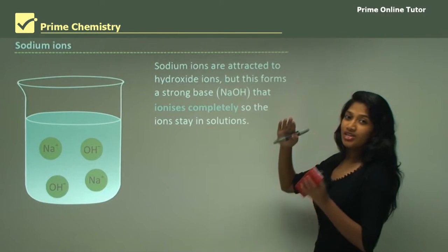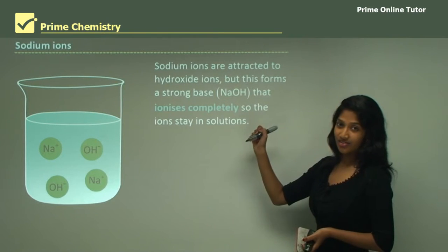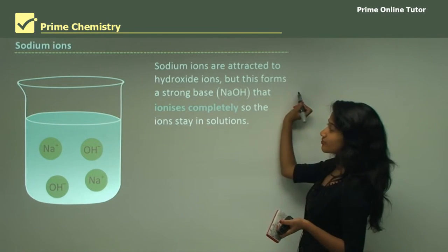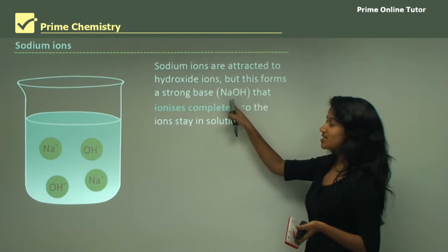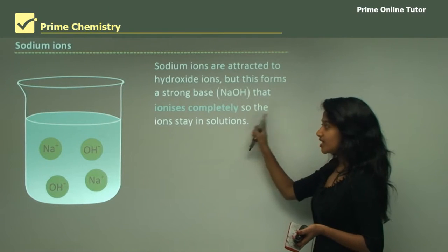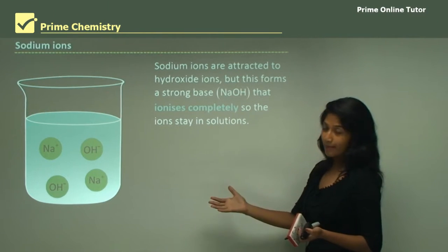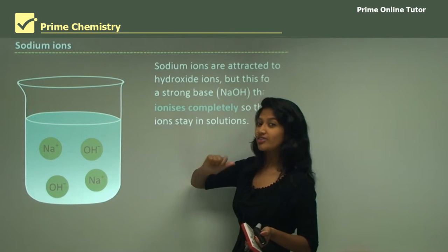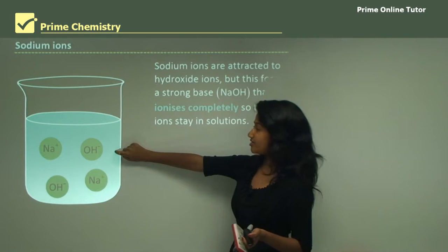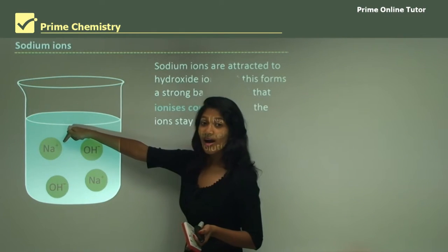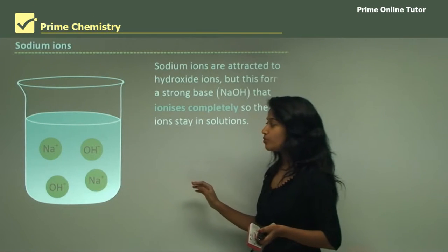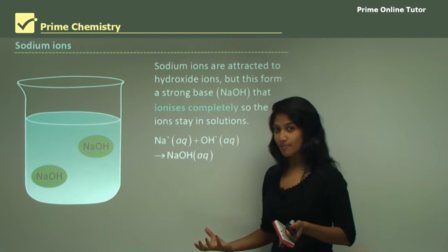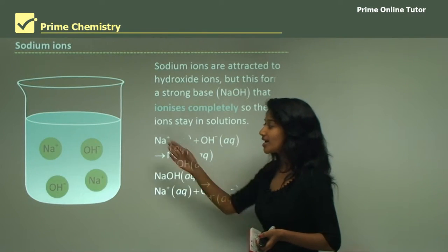Sodium ions attract the negatively-charged hydroxide ions, forming sodium hydroxide — a strong base. Since sodium hydroxide is a strong base, it ionizes completely, so the ions stay in solution. The hydroxide ions in solution come from the water, and the sodium ions come from NaCl. When they react they form sodium hydroxide, but it immediately re-ionizes.